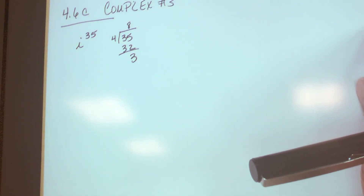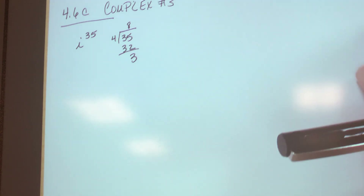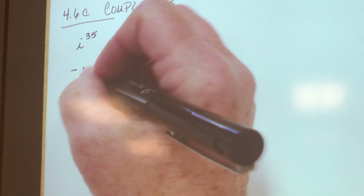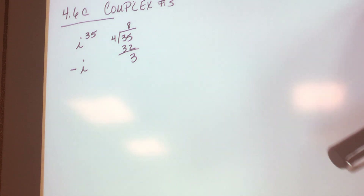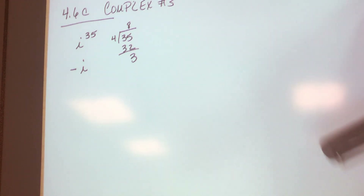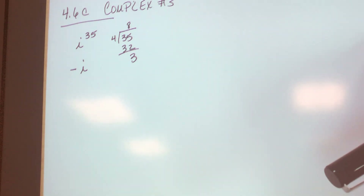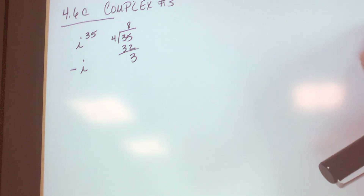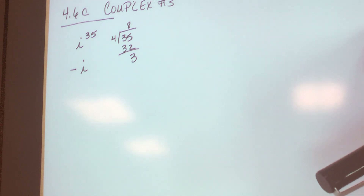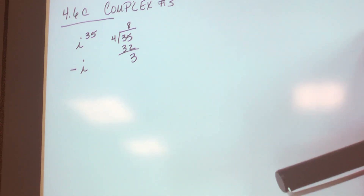This is what I care about — here's my answer. i to the 3rd is negative i. The remainder is what matters. You go 1, 2, 3, 4 — and then it repeats in groups of 4, up to 32, then 33, 34, 35. The remainder is how many you're counting down, okay?